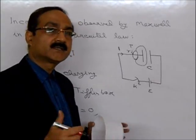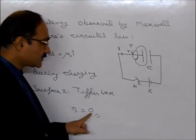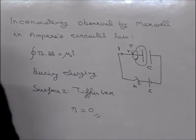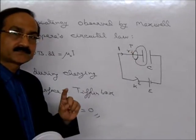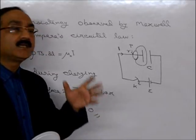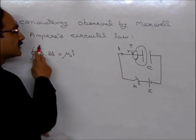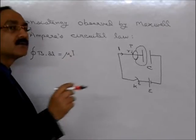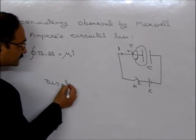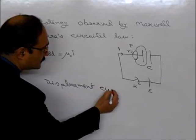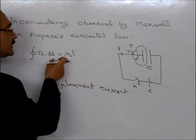What did we observe? If we take surface 1, B comes out to be non-zero. If we take surface 2, B comes out to be zero — for the same point. That is the inconsistency of Ampere's circular law. Maxwell realized that something is missing in Ampere's circular law, and he introduced the concept of displacement current to remove the inconsistency, modifying the law.